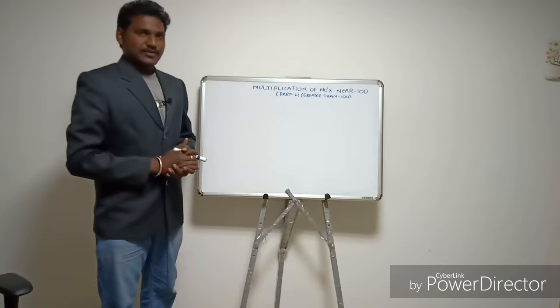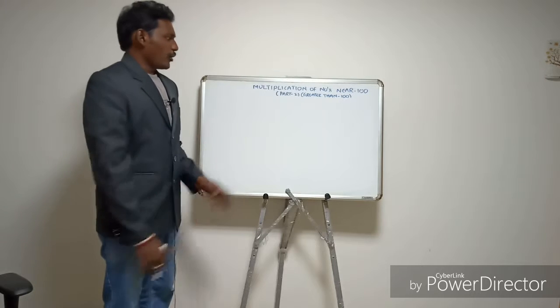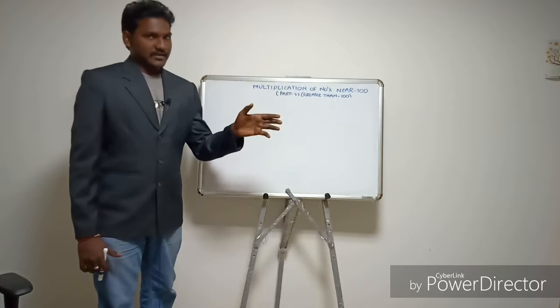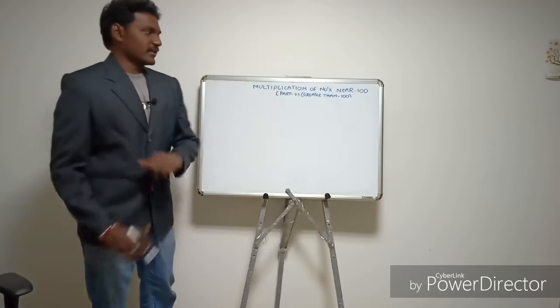Good morning everyone. My name is Rokish. Today we are going to discuss a beautiful shortcut for multiplication of numbers near 100, where one number is less than 100 and one number is more than 100.